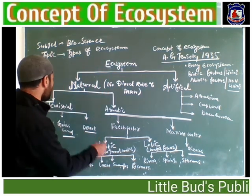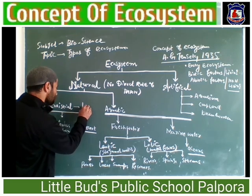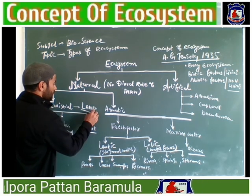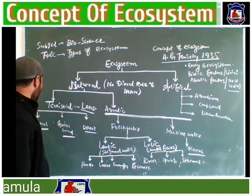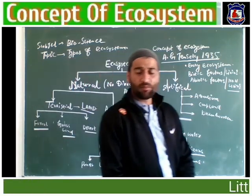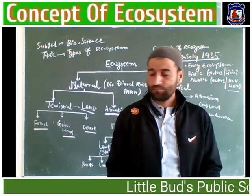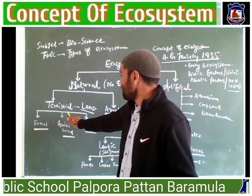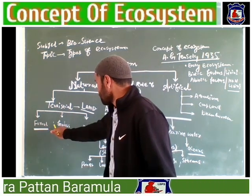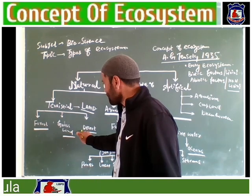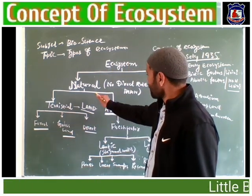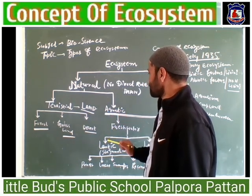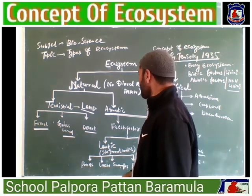The natural ecosystem is divided into terrestrial ecosystem and aquatic ecosystem. The terrestrial ecosystem is present on land — forest ecosystem, grassland ecosystem, and desert ecosystem are the types of terrestrial ecosystem. The aquatic ecosystem is present in water.